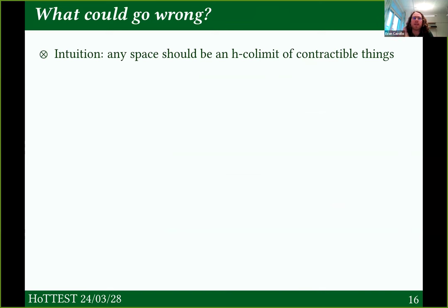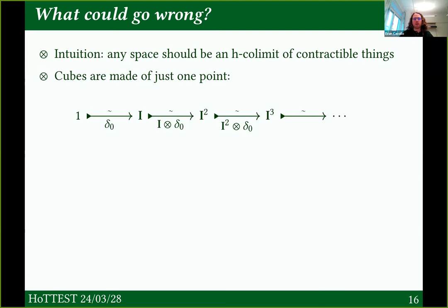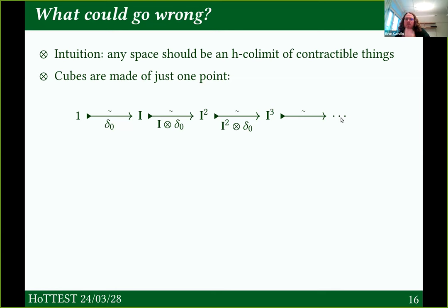Let's ask ourselves: what could go wrong? An intuition we have for spaces is that any space is a homotopy colimit of contractible things — a space is made by gluing a bunch of disks together. If we look at our cubical sets, any cube is going to be contractible itself. But even this is not immediate: we have to know that the terminal object is contractible by definition, and that the map from 1 to the interval is an open box inclusion, giving an equivalence to 1. Then we argue the 2-cube is also contractible, then the 3-cube, and so on. It comes out of the structure of the cube category and the fibrations chosen.